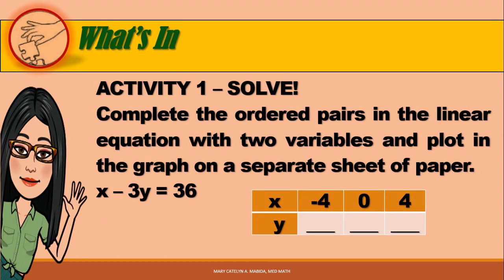Let's recall the previous lesson. Activity 1: solve and complete the ordered pairs in the linear equation with two variables and plot them in the graph on a separate sheet of paper. Substitute the values of x, which are negative 4, 0, and 4, into our equation x minus 3y equals 36 to solve for the values of y.